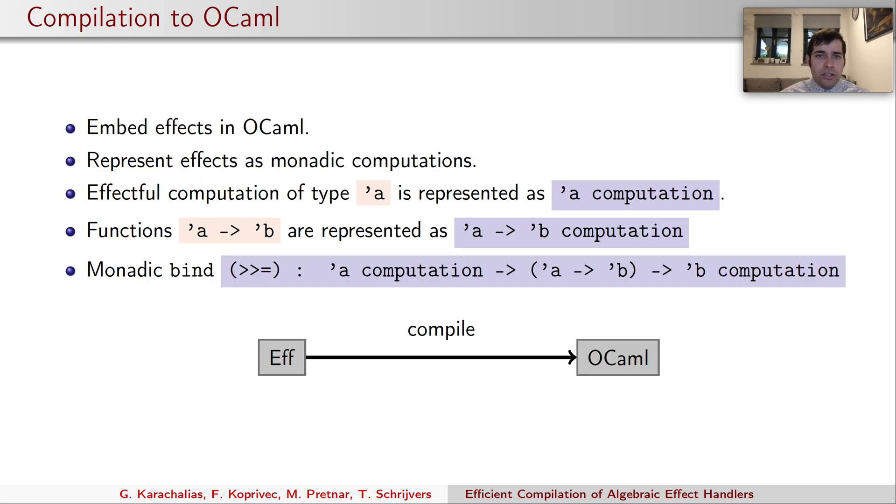To compile effects to OCaml, we represent them as monadic computations. Effectful computations of type A are represented as computations of type A, and functions using the effects get presented as functions from values to computations. Sequencing is then done by a simple monadic bind.